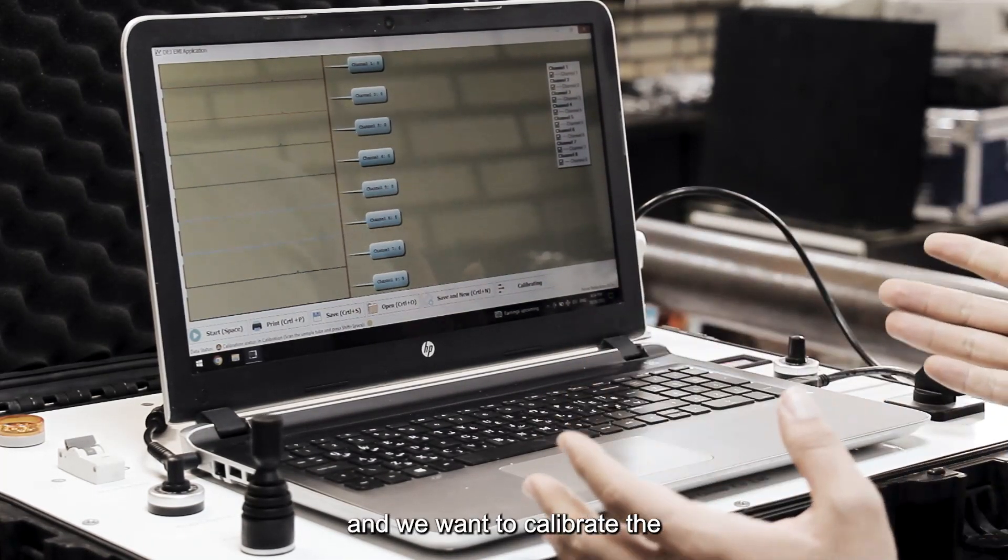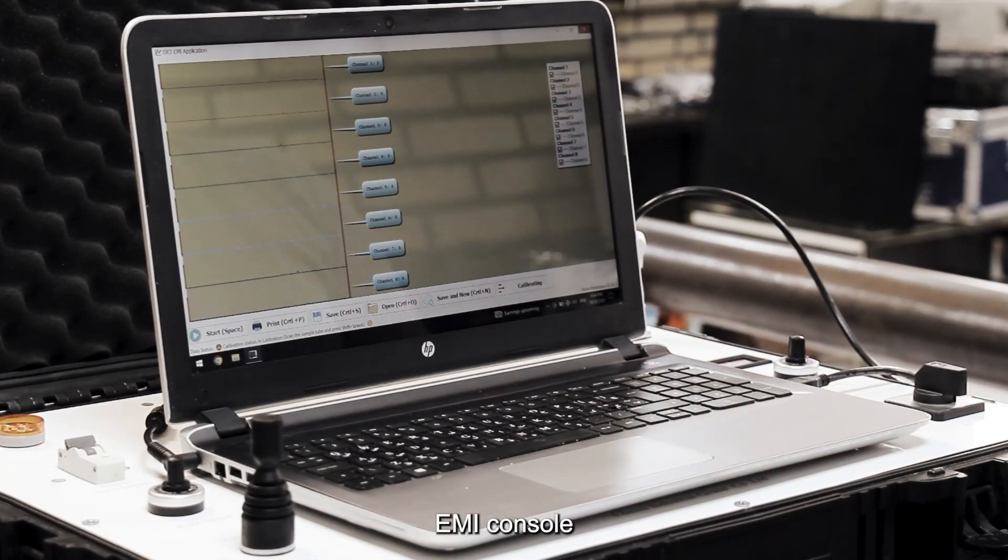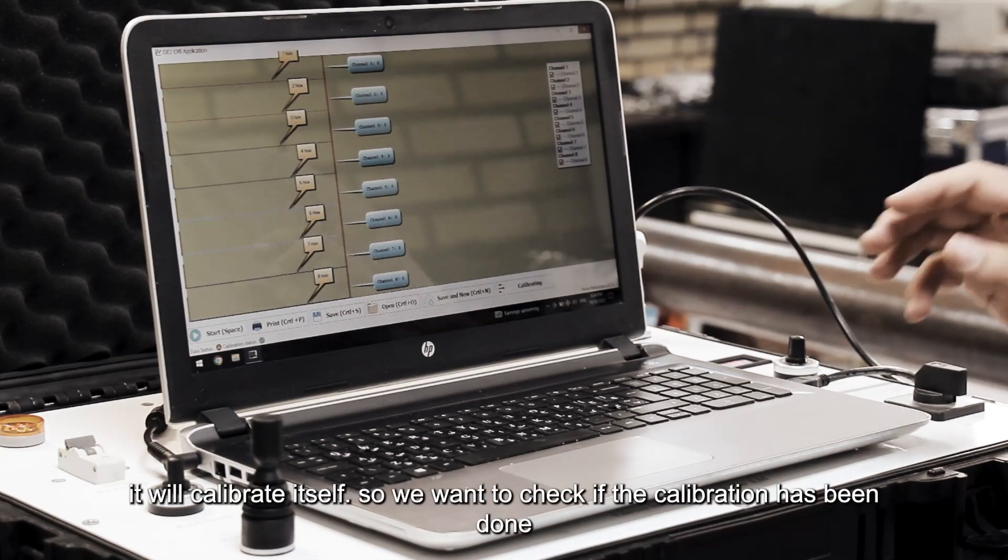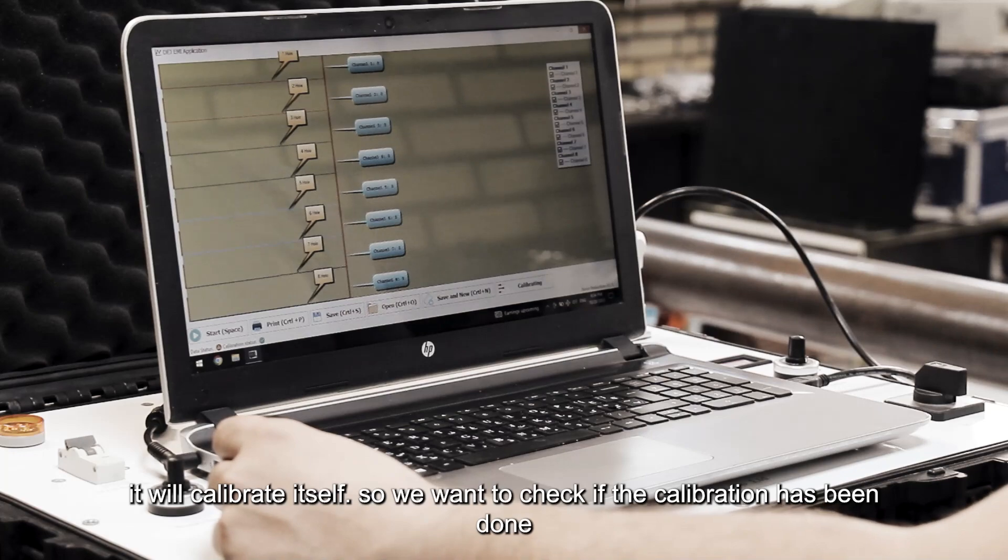And we want to calibrate the EMI console. By pressing the Enter button, the software will automatically detect the sample holes, and it will calibrate itself.